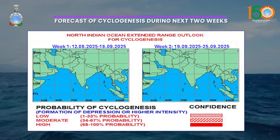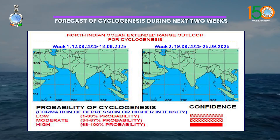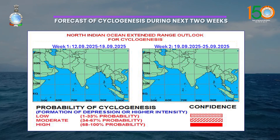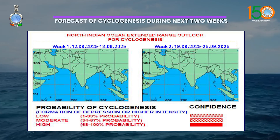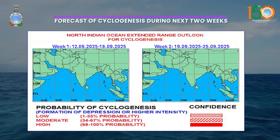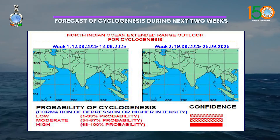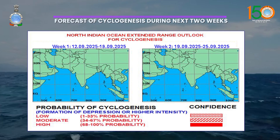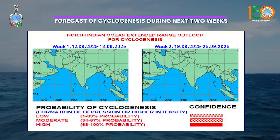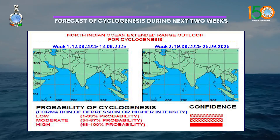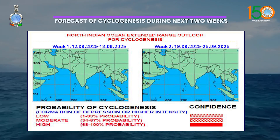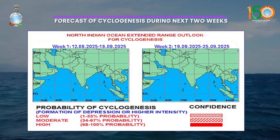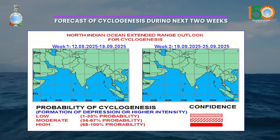During these two upcoming weeks there is no probability of cyclogenesis over the Indian seas — that is, the Arabian Sea, Bay of Bengal and Indian Ocean. Under the influence of an existing cyclonic circulation over south Odisha and north coastal Andhra Pradesh, a low pressure area is likely to form by 13th September over parts of west-central Bay of Bengal. During the first half of week two, a fresh upper air cyclonic circulation is also likely to form over west-central Bay of Bengal.